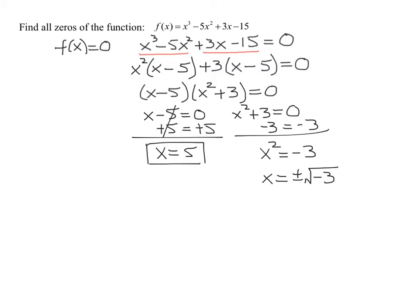And now what is the square root of a negative number? Remember that's where we get our i's from because the square root of negative one is i. So it's plus or minus i the square root of three.